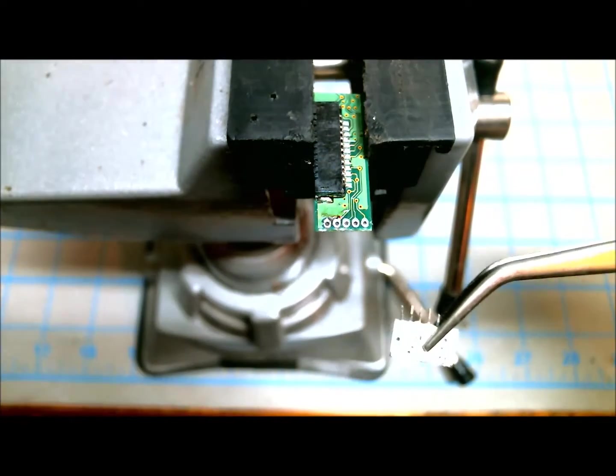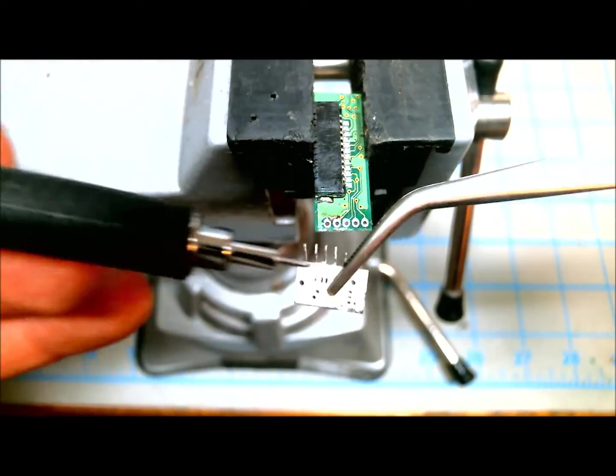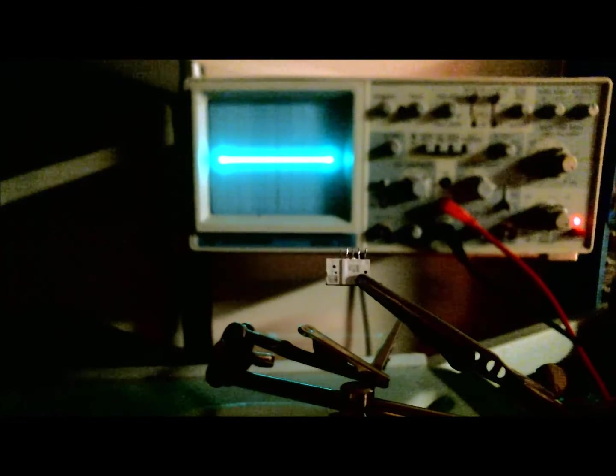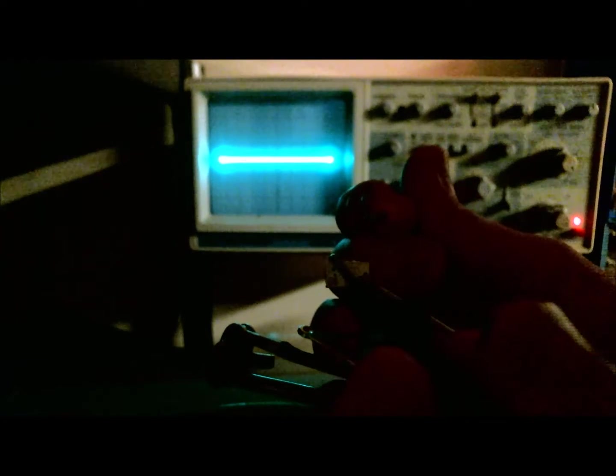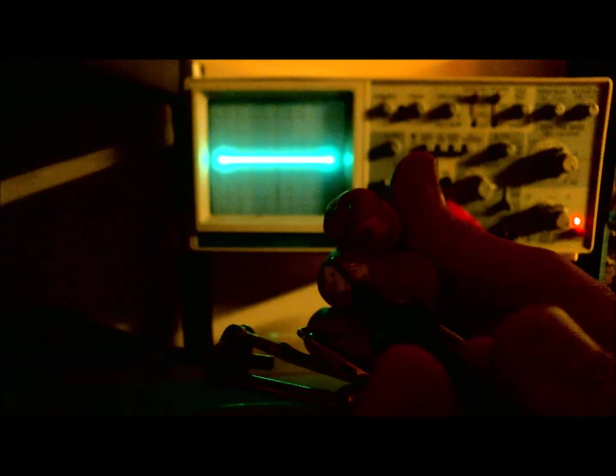Now I need to determine which pin is red, green, and blue. I'm going to use the component test on my oscilloscope just because it's faster. But you can achieve the same thing using your DC power supply and, let's say, a 4.7k ohm resistor. So here we go. Put negative over here and test the positive on here. So that's the blue. So pin two is blue. Pin three is green. And pin four is red.